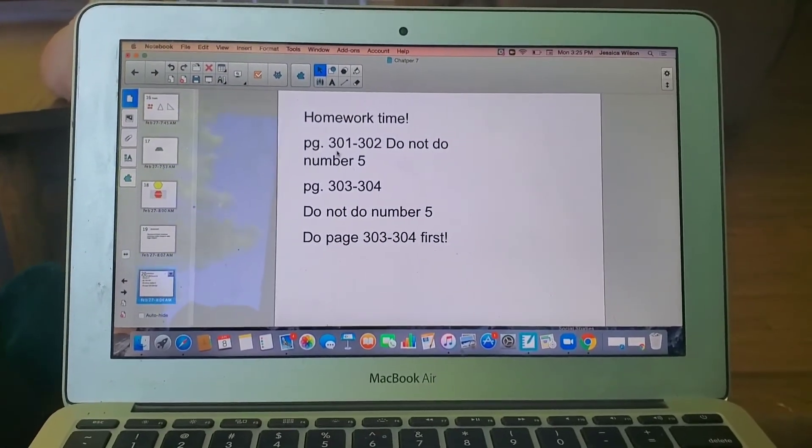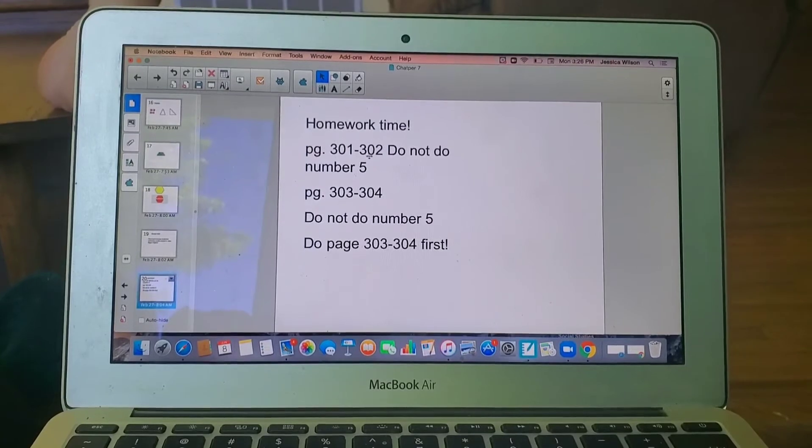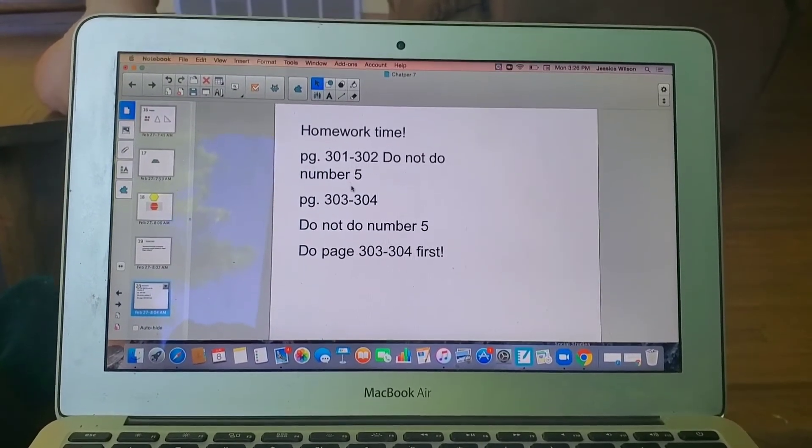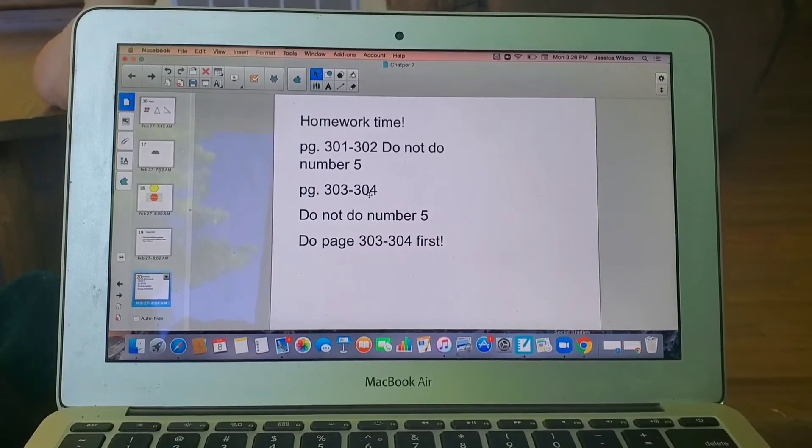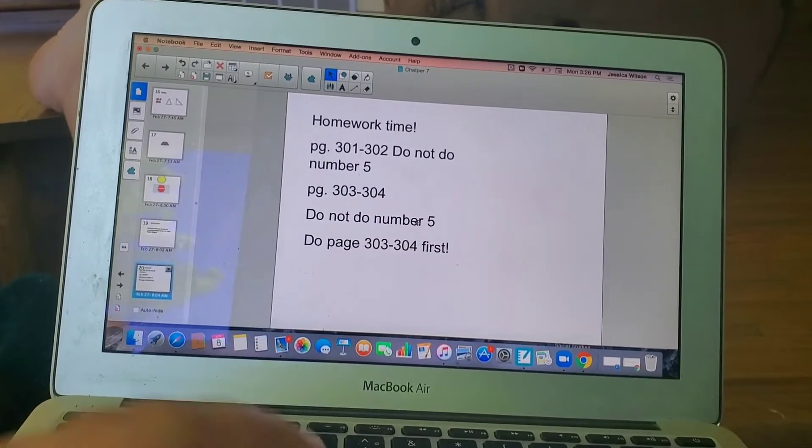We're going to skip that one. So now we're going to move on to homework. You're going to do 301 and 302. You're not going to do number five. You're also going to do 303 and 304, but you're not going to do number five. So this is what you have to do for page 301 and 302: you have to look at the rule. For example, question number one says one square corner and three sides, so you have to look at the shapes that follow that rule.